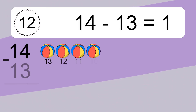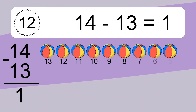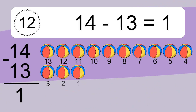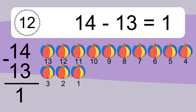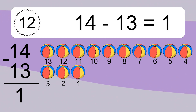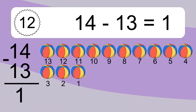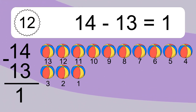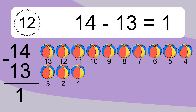14 minus 13 equals what? 14 minus 13 equals 1. Let's count it: 13, 12, 11, 10, 9, 8, 7, 6, 5, 4, 3, 2, 1.